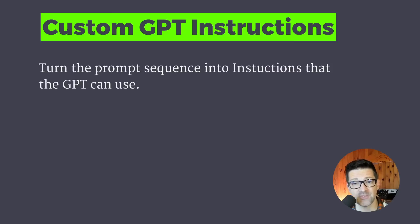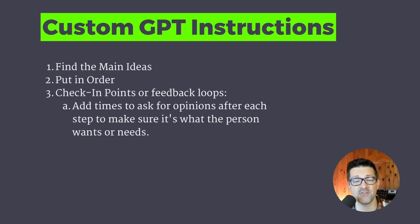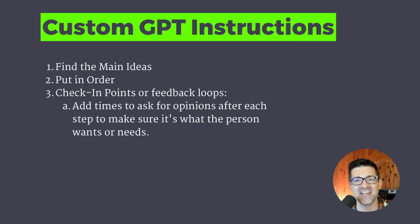Next we need to convert that prompt sequence into the instructions we're going to be using in the custom GPT. Some helpful ways to think about that: get a feel for the main ideas, make sure they're going in the proper order, and then add check-in points or feedback loops. That prompts the custom GPT to ask the user, 'Am I going in the right direction? Which of these do you like?' — building a little back and forth as the custom GPT is completing whatever task you're looking for it to complete.